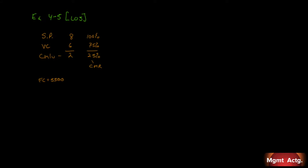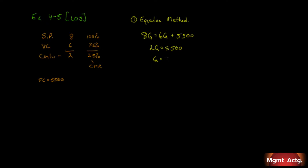Number one: solve the company's breakeven point in unit sales using the equation method. We want to solve for quantity Q. Our sales are 8Q, and at breakeven, sales equal variable costs plus fixed costs: 8Q = 6Q + $5,500. So 2Q = $5,500, which means Q = 2,750 units. That's the breakeven point in unit sales using the equation method.